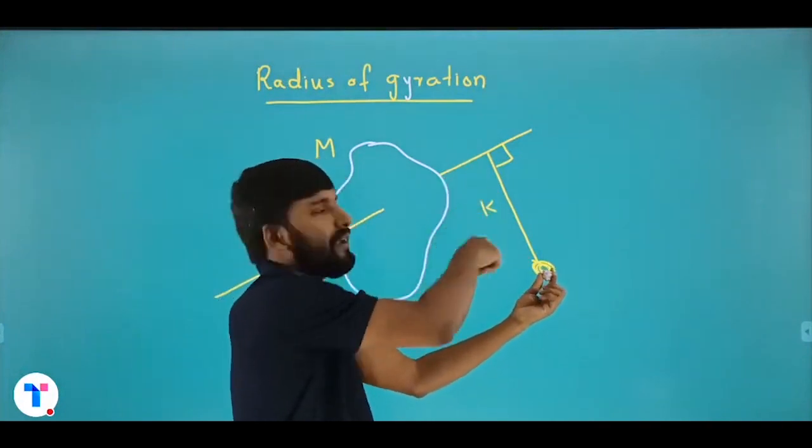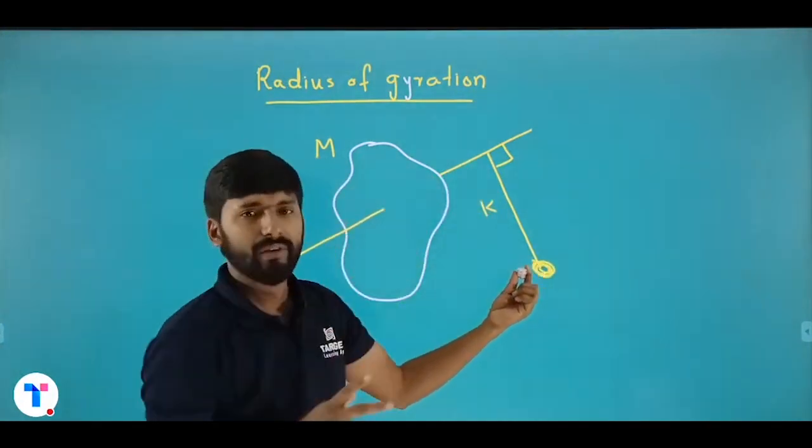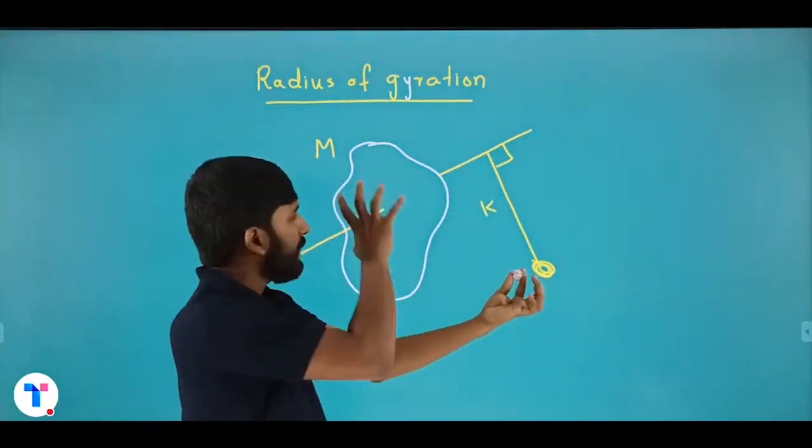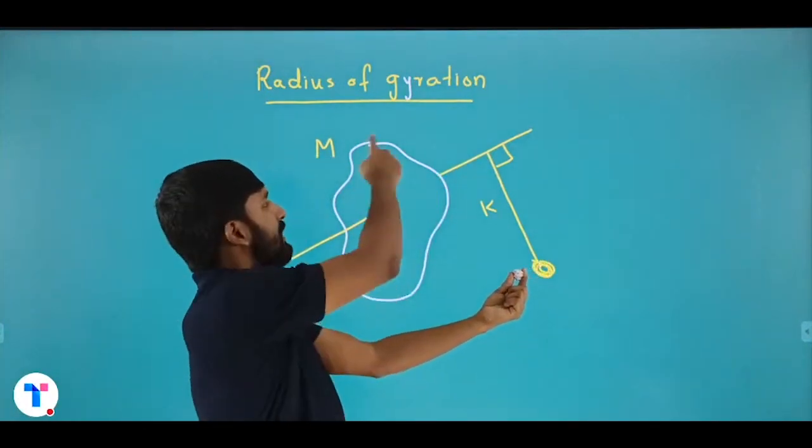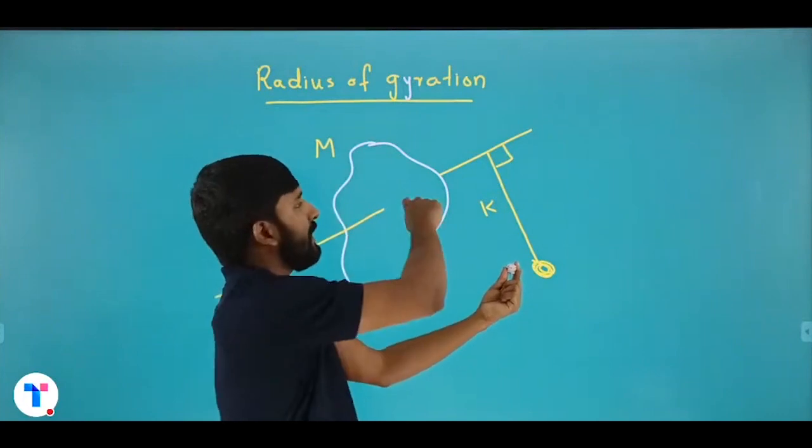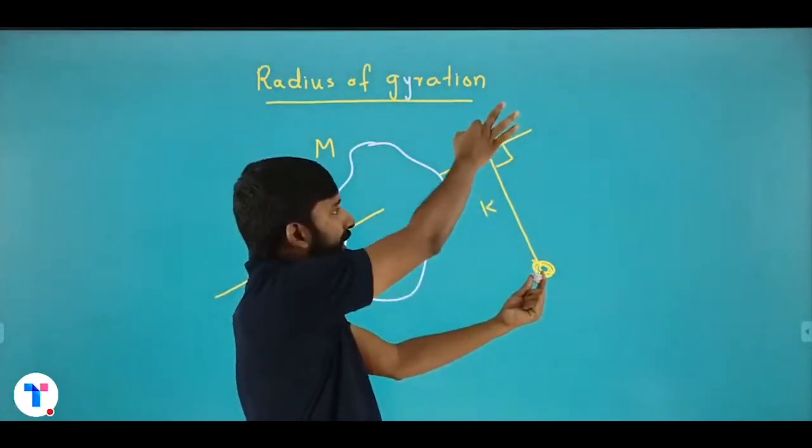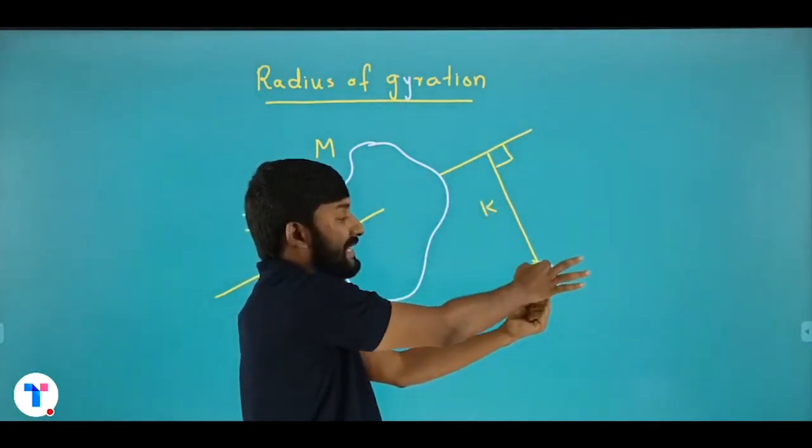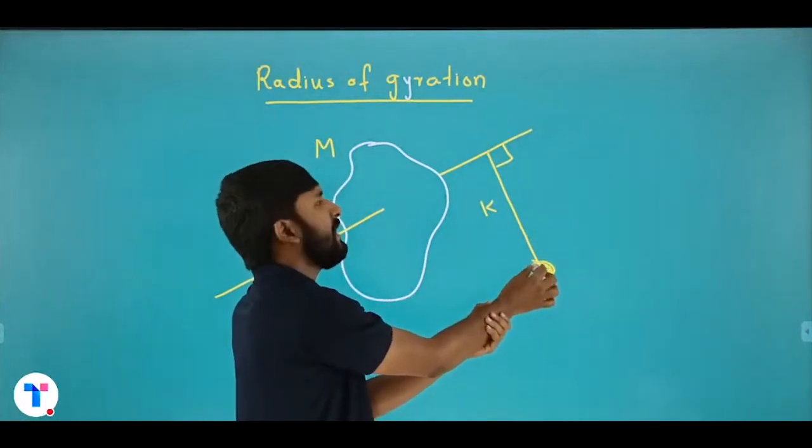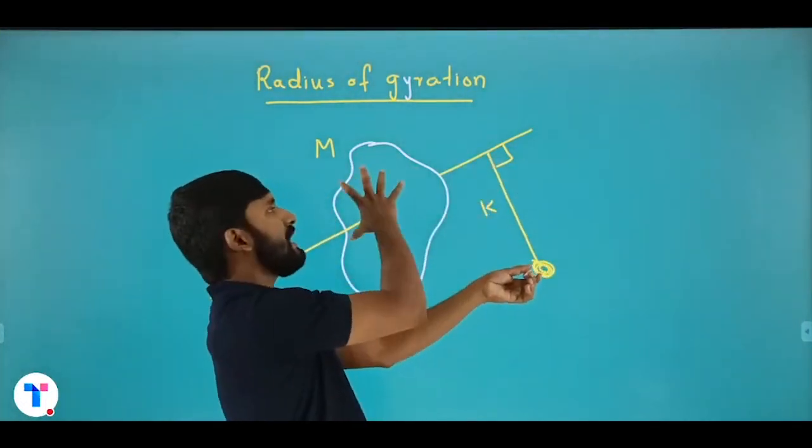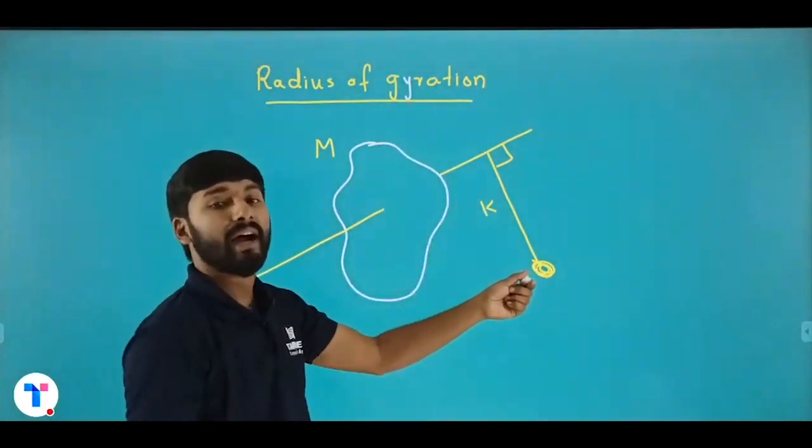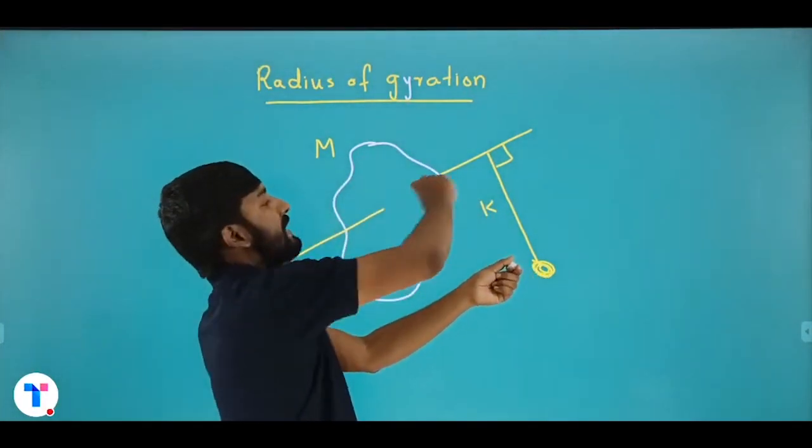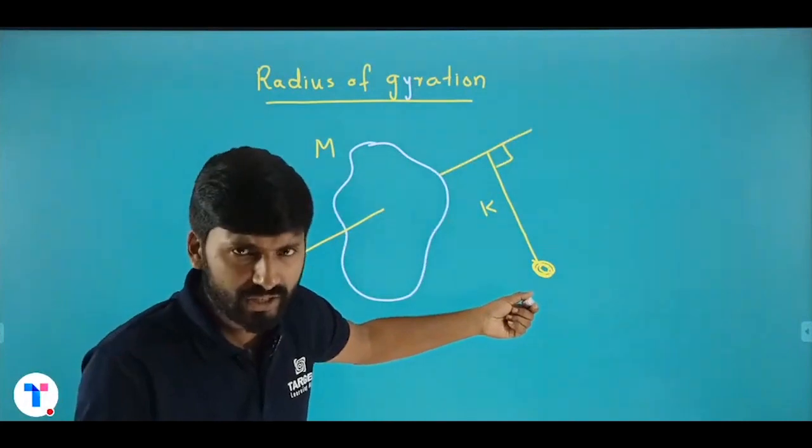That distance is the radius of gyration. One more time. E axis is the radius of gyration. The first time, the other axis is the perpendicular distance. The other axis is the same moment of inertia. The other axis is the radius of gyration. Clear?